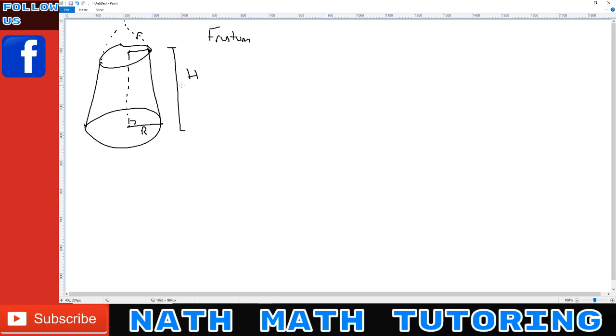The method we want to use is the cross section method. This means we need to find the volume of the cross section and then sum up all those little cross sections.